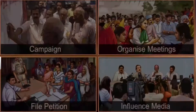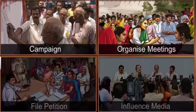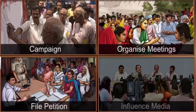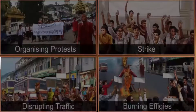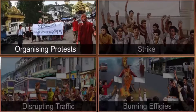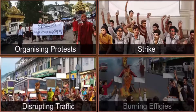For example, they carry out information campaigns, organize meetings, file petitions, and influence the media to highlight issues and mobilize public support. If these efforts don't have the desired effect, the groups can use some unconventional methods such as organizing protests, strikes, disrupting government programs, and burning effigies.